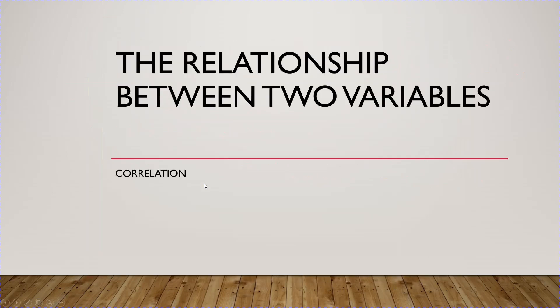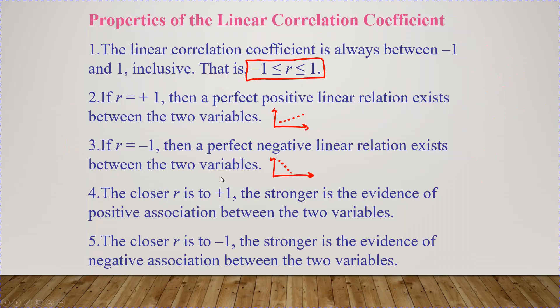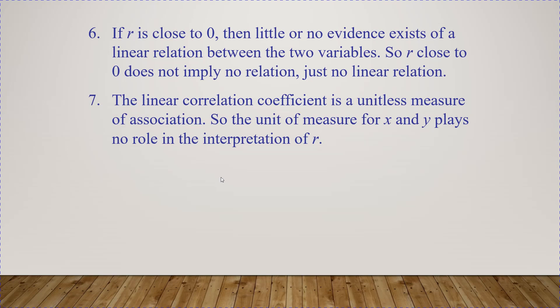Going back at our example, r should be really close to positive 1 because it looks almost like a perfect straight line. If r is close to 0, there's little or no evidence of a linear relation between the two variables. Importantly, r close to 0 does not imply no relationship — it just says there's no linear relationship. Also, r is a unitless measure of association, so the units of x and y play no role in the interpretation of r.